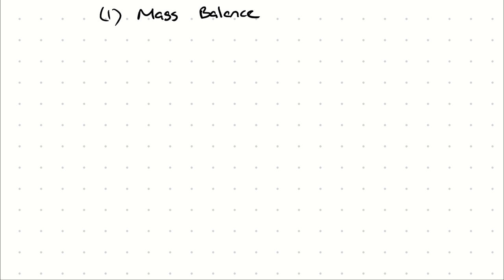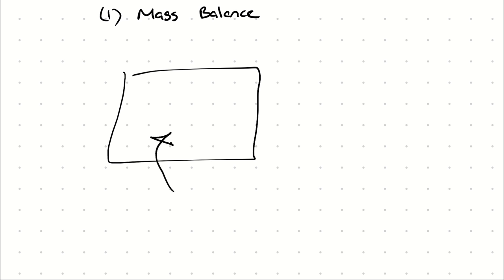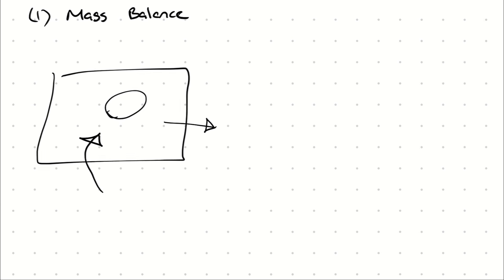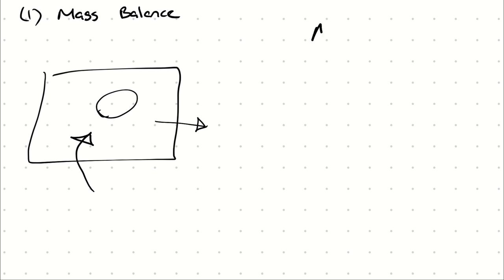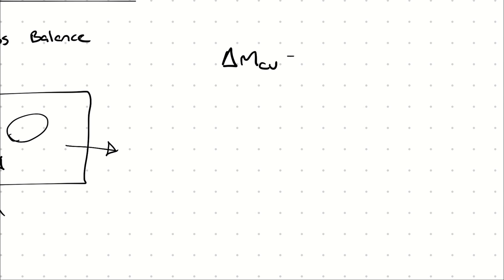The mass balance is exactly like the energy balance, in that it's not so much an equation as it is just a listing of the possibilities. If you have a system and mass enters it, either the mass stays there or it doesn't — those are the list of possibilities. So when we describe the mass of a control volume, we can say that the change in mass of the control volume is equal to the mass entering minus the mass exiting the control volume.